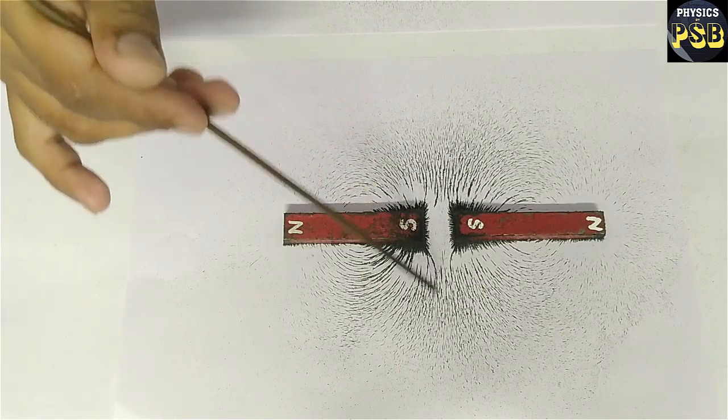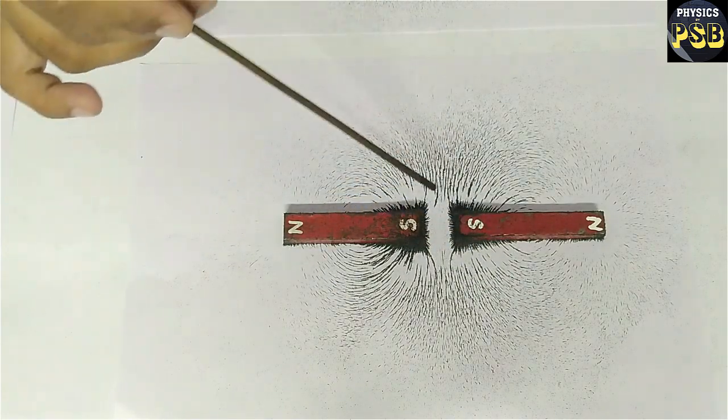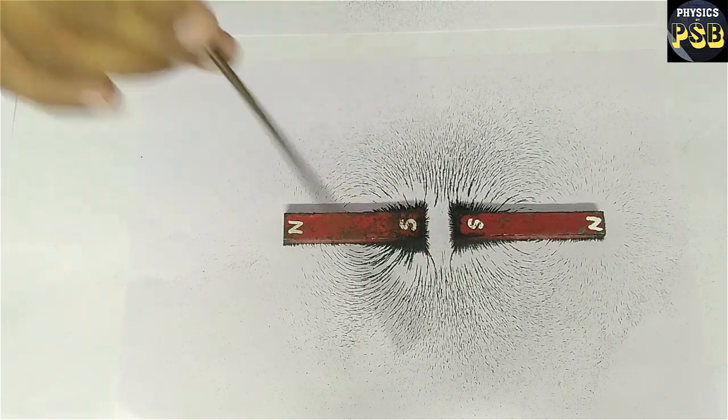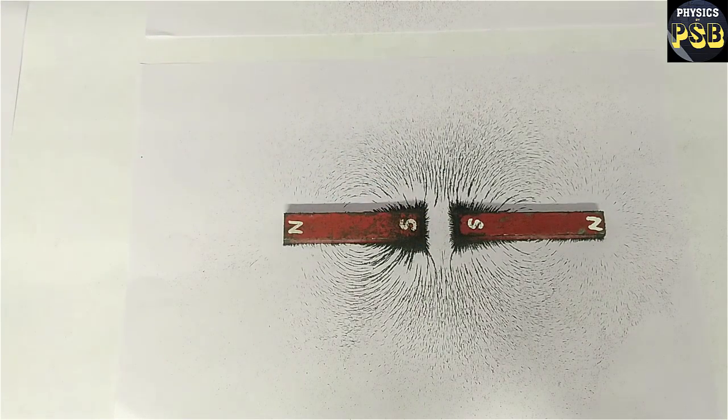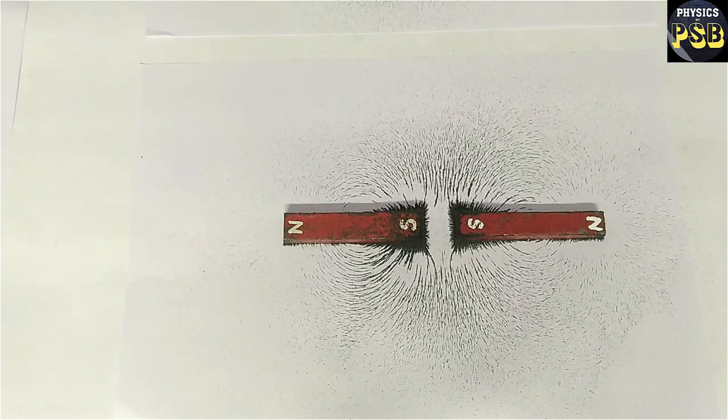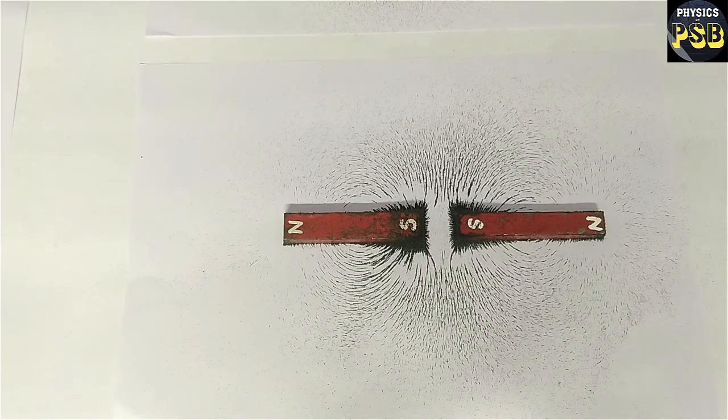You can see, the magnetic field lines are found to be repelling each other. This phenomenon shows that same poles of the magnet repel each other, whereas different poles attract each other.